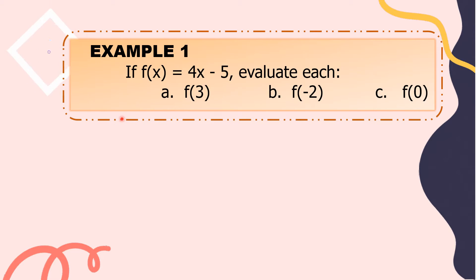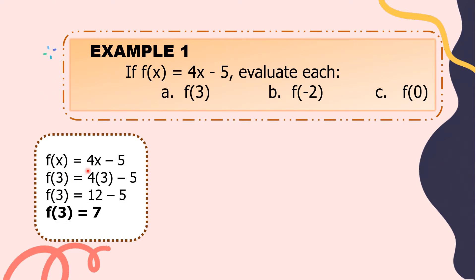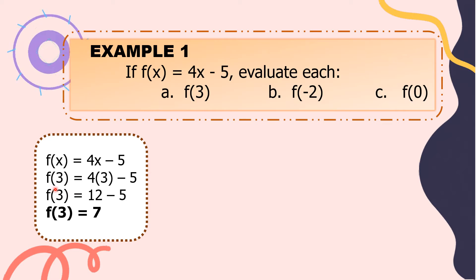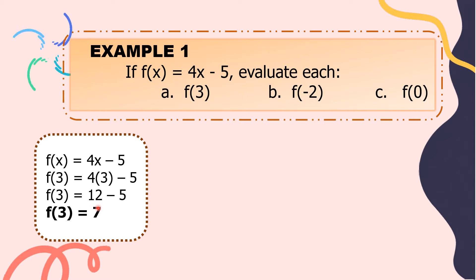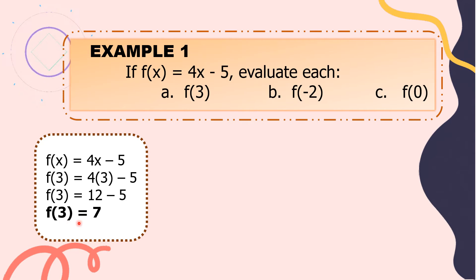To evaluate the function, we just substitute or replace the given values of x into the function. For letter A, our function is f of x equals 4x minus 5. The value of x is 3, so we change x into 3. f of 3 equals 4 times 3 minus 5. 4 times 3 is 12; 12 minus 5 equals 7. So f of 3 equals 7.